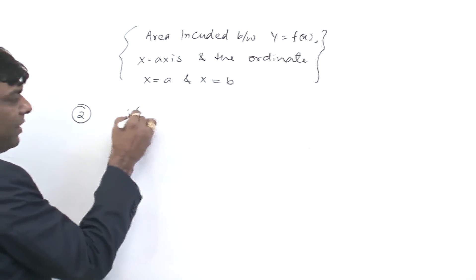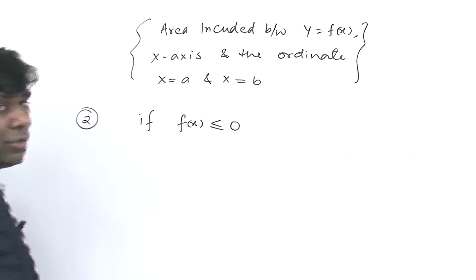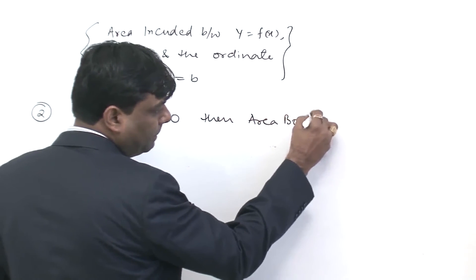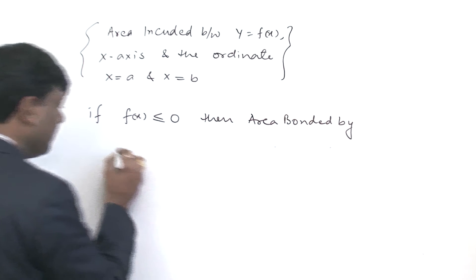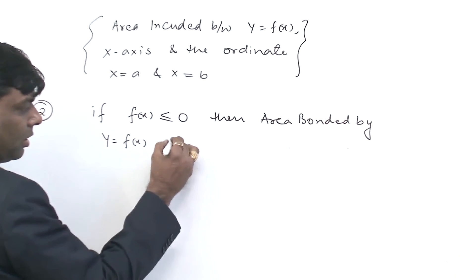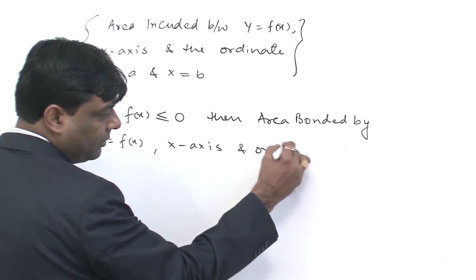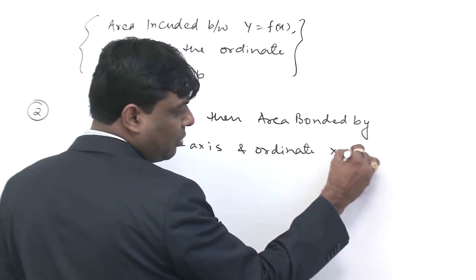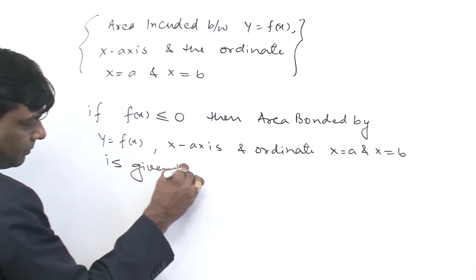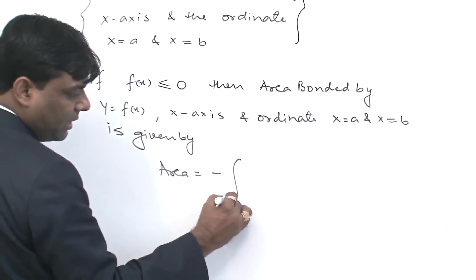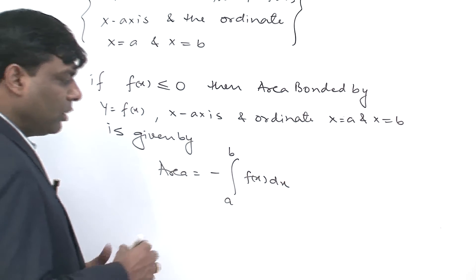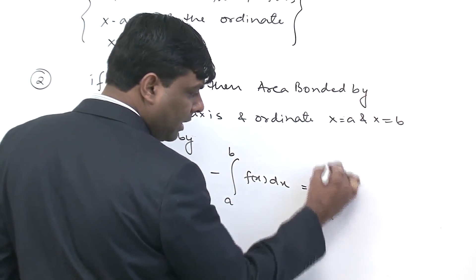If f(x) is less than or equal to 0, then the area bounded by y = f(x), x-axis and the ordinate x = a and x = b is given by: area = minus integral a to b of f(x) dx, or equal to minus integral a to b of y dx.